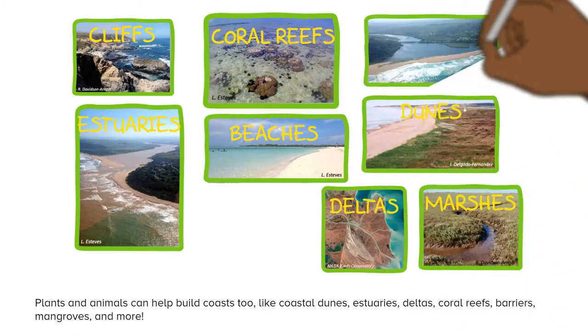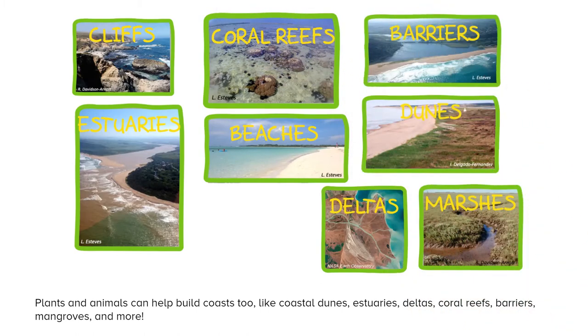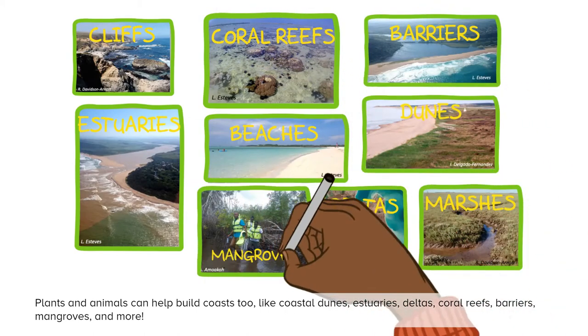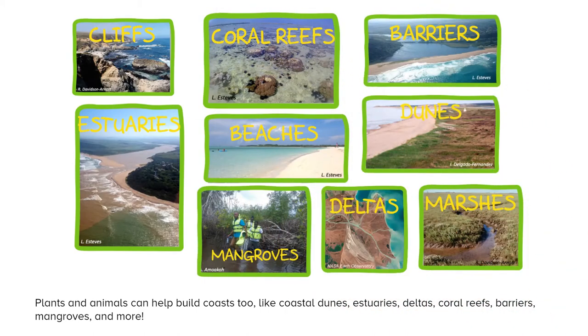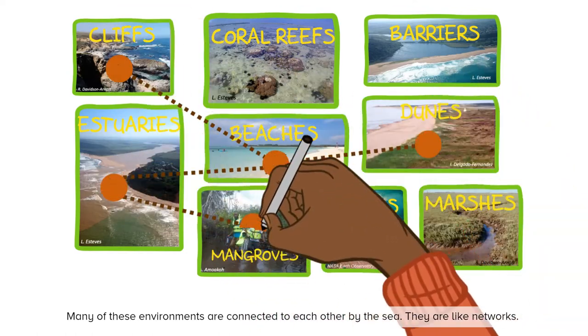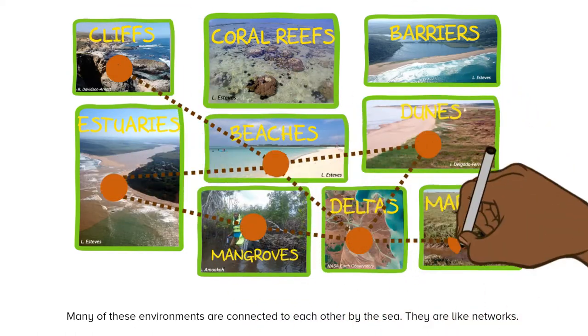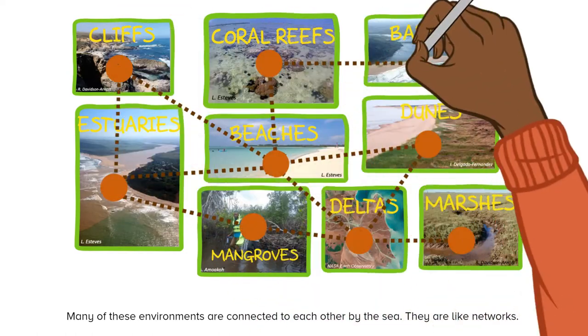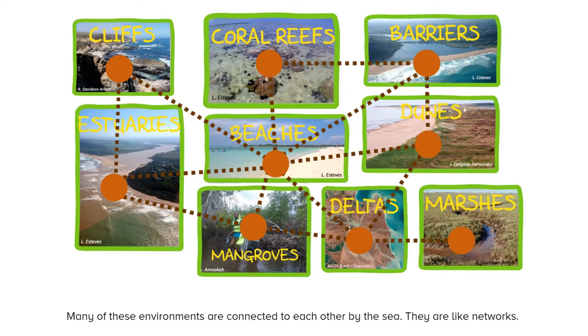Coral reefs, barriers, mangroves and more. Many of these environments are connected to each other by the sea. They are like networks.